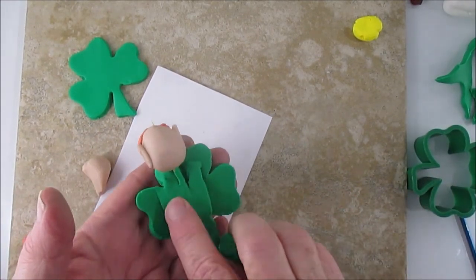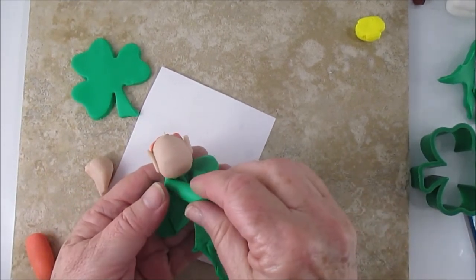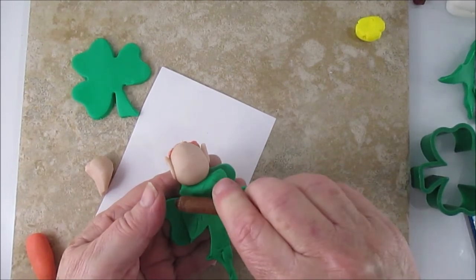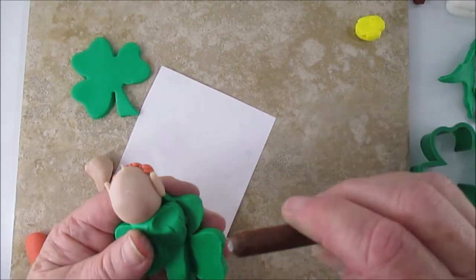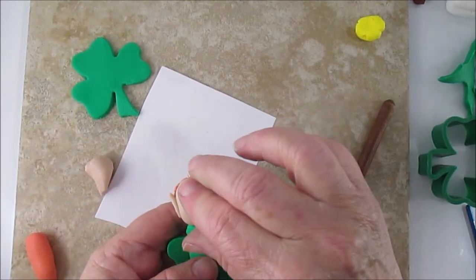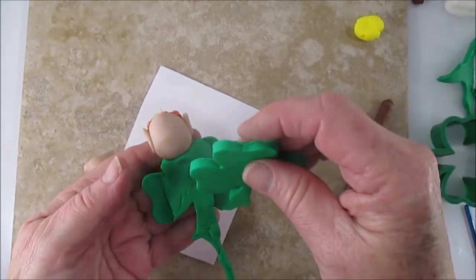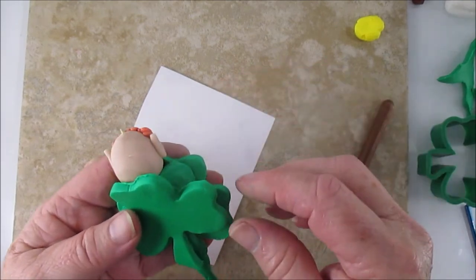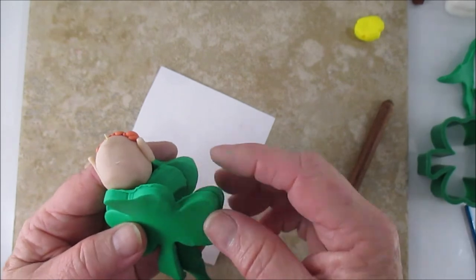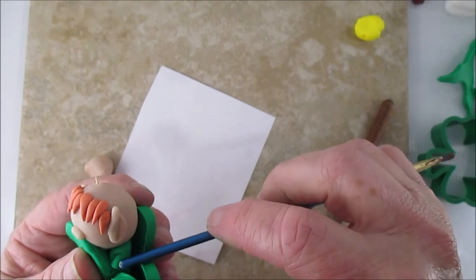Now we're going to fill in a little bit on the back. I know this uses a lot of green clay, doesn't it? But you want the back to look nice too, and that's where we're going to put the other shamrock. Now you don't have to do this, you can just smooth out the back, but I kind of like putting the other shamrock on. But if you don't want to use that much clay, just smooth out the back.